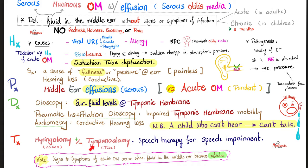Management is similar to acute otitis media; however, we are not giving antibiotics here because it's not infected. Myringotomy and tympanostomy tubes can help. Don't forget that a child who cannot hear cannot talk, so make sure to assess whether the child has speech impairment. If there is, please refer to a speech pathologist and try to treat this condition as early as possible.